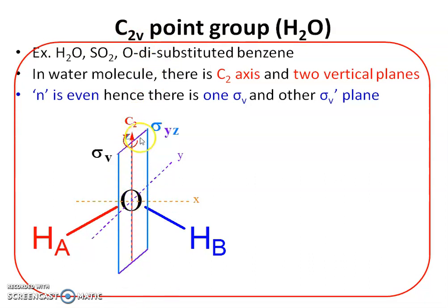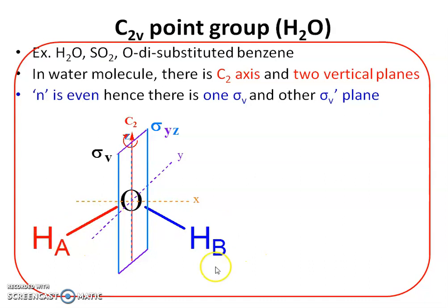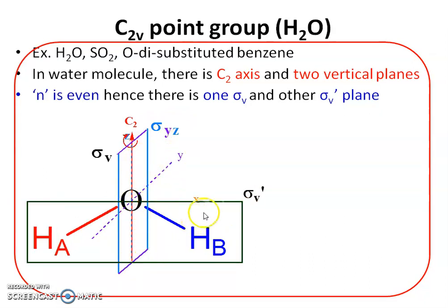Consider the first plane passing through the principal axis. When the molecule is reflected through this plane, hydrogen A moves to the right side and B to the left, giving an equivalent structure. After a second reflection we get the identical structure. This first vertical plane is oriented along the YZ plane. The second plane, sigma V prime, is oriented along the XZ plane; reflection through it leaves the positions of oxygen and both hydrogen atoms unchanged, giving an identical structure.